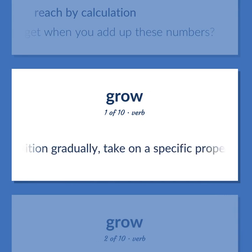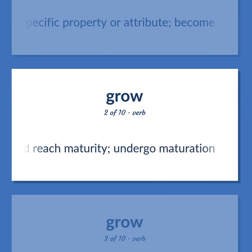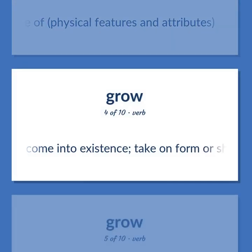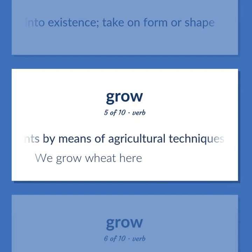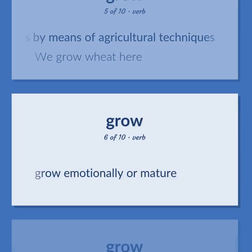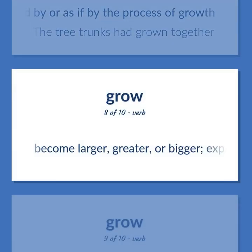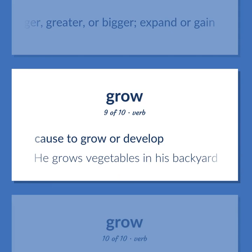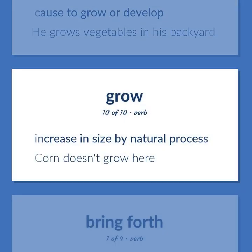Grow: Pass into a condition gradually, take on a specific property or attribute, become. Develop and reach maturity, undergo maturation. Come to have or undergo a change of physical features and attributes. Come into existence, take on form or shape. Cultivate by growing — we grow wheat here. Grow emotionally or mature. Become attached as if by the process of growth — the tree trunks had grown together. Become larger, greater, or bigger; expand or gain. Cause to grow or develop — he grows vegetables in his backyard. Increase in size by natural process — corn doesn't grow here.